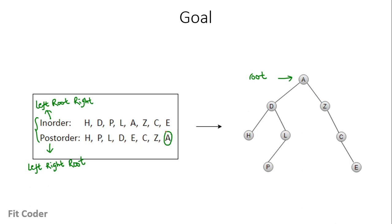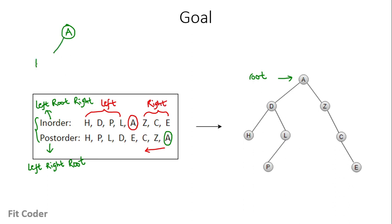The intuitive logic is we traverse the postorder from the right side. We pick each node — first we pick A, so A will be the root of the tree. Then we search A in the inorder traversal. All nodes on the left of A will be the left subtree, and nodes on the right will be part of the right subtree. So the left subtree is H, D, P, and L, and the right subtree is Z, C, and E.